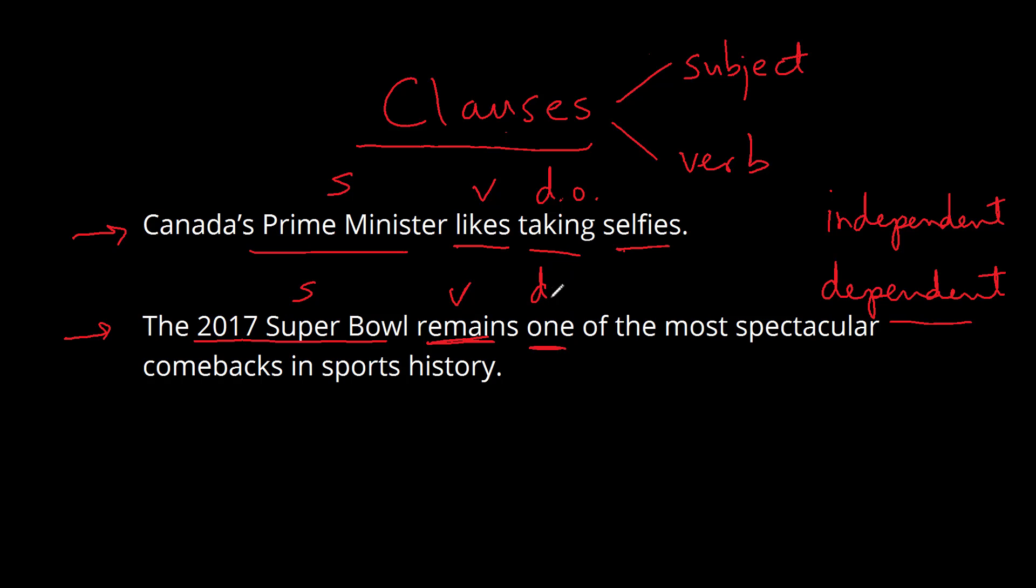Again, the direct object is not crucial. It's just the case that these two sentences follow this pattern. And then this one ends with a couple of prepositional phrases, which I'm going to put in brackets because they're not really essential. So we have of, there's our preposition, the most spectacular comebacks. That's the object of the preposition. And then our second prepositional phrase is in sports history. And in is the preposition, and sports history is the object of the preposition.